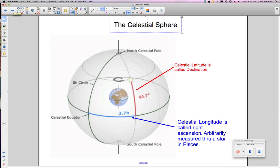So latitude is called declination. This particular star has a declination of 44.7 degrees, relative to the celestial equator, which we talked about before.